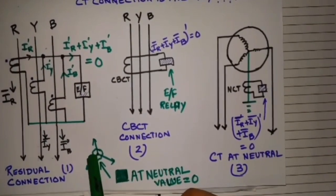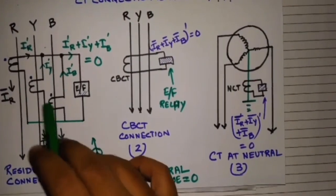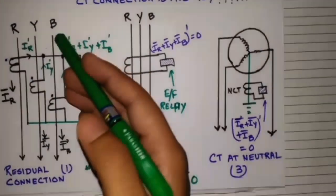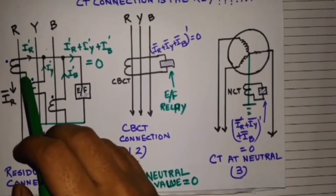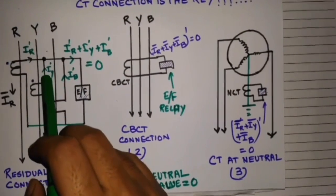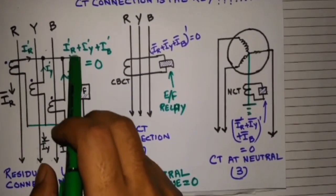Because the balanced three-phase system at neutral value will be always zero. So their sum will be zero. In this CT, only the magnitude is reflecting as per the CT ratio.